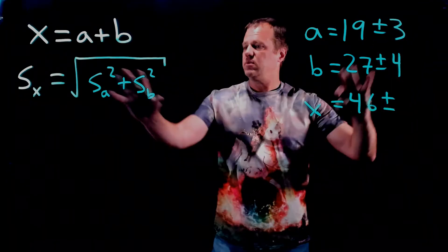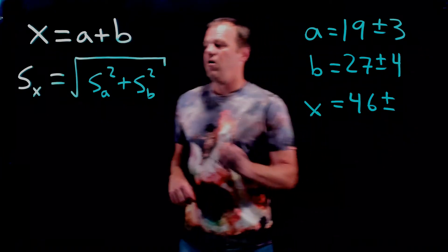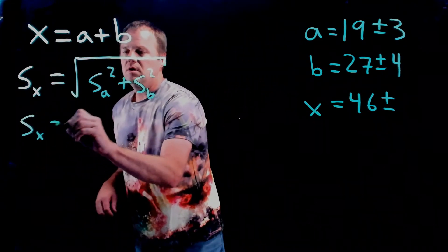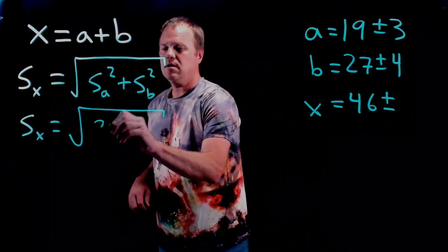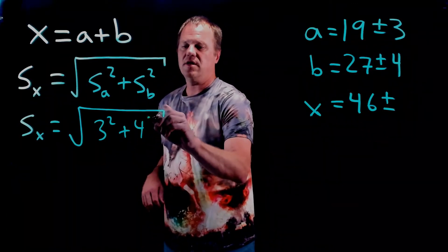Let's take these numbers, throw them into this formula, and see how it works out. Uncertainty in a is 3, and uncertainty in b is 4.